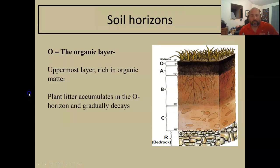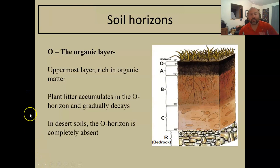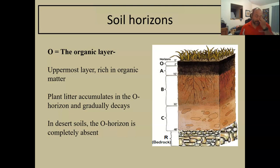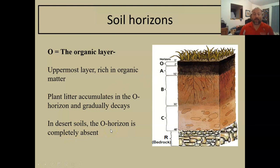In the uppermost O layer, the soil is rich in organic matter — you can see the nice dark color in the picture. If it's a lighter color, that means less organic matter is present. Plant litter — leaves, twigs, dying grass — accumulates here and eventually starts the decay process, working its way back into the soil. In the desert, the O horizon is completely absent because there's just not enough material to make up an organic layer.